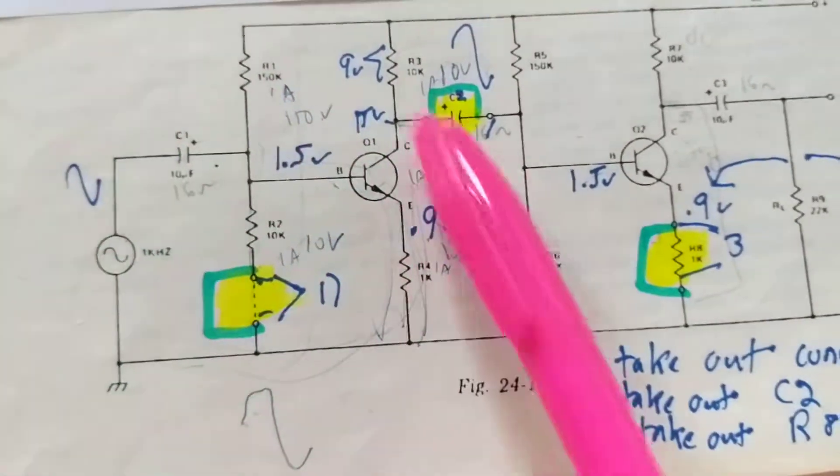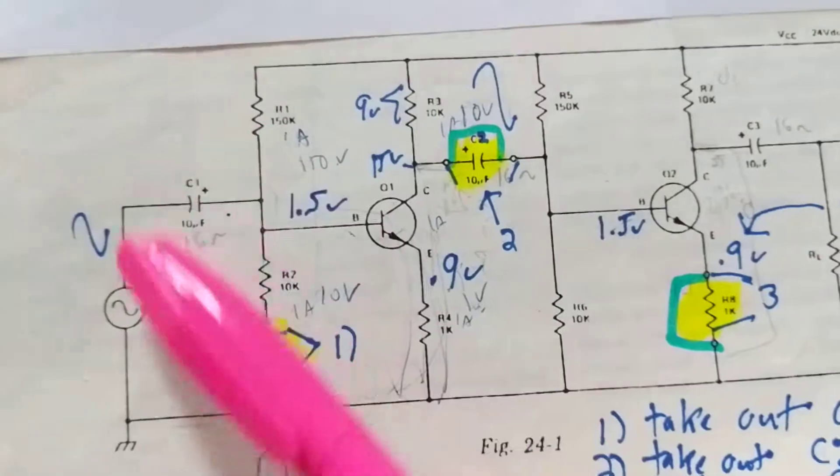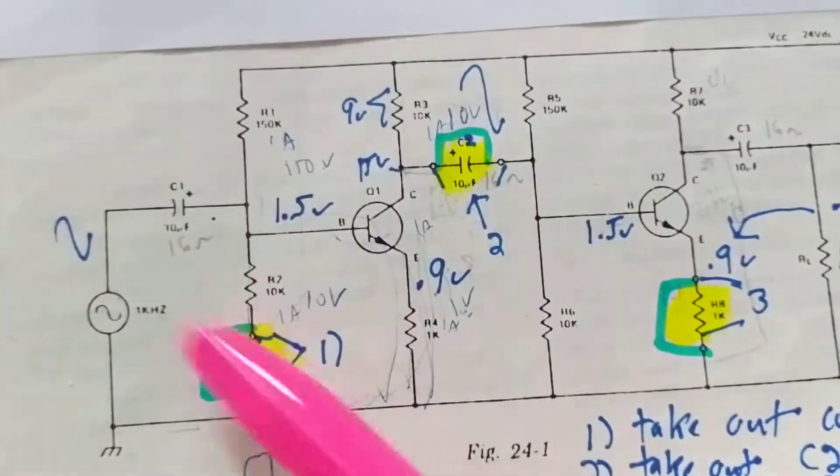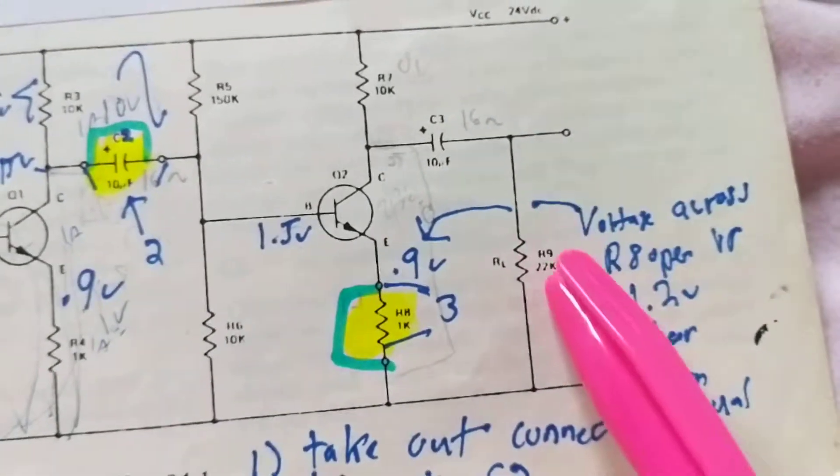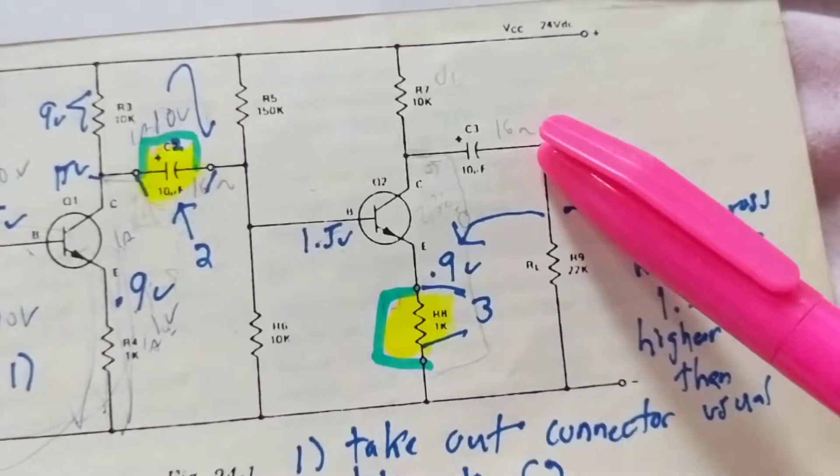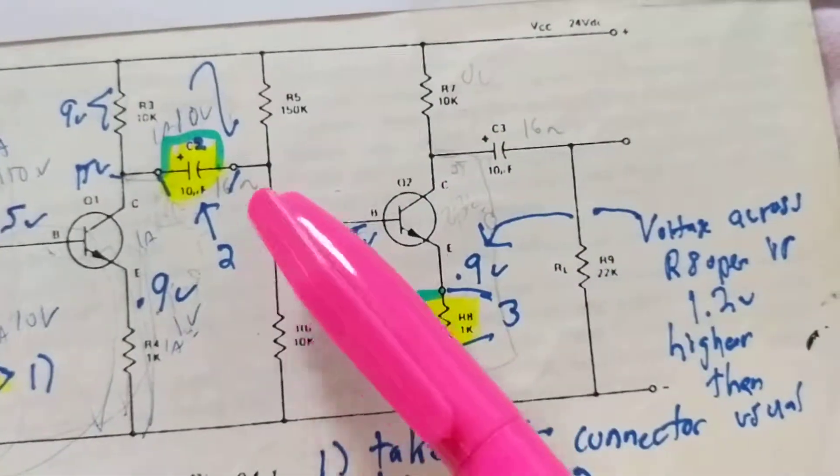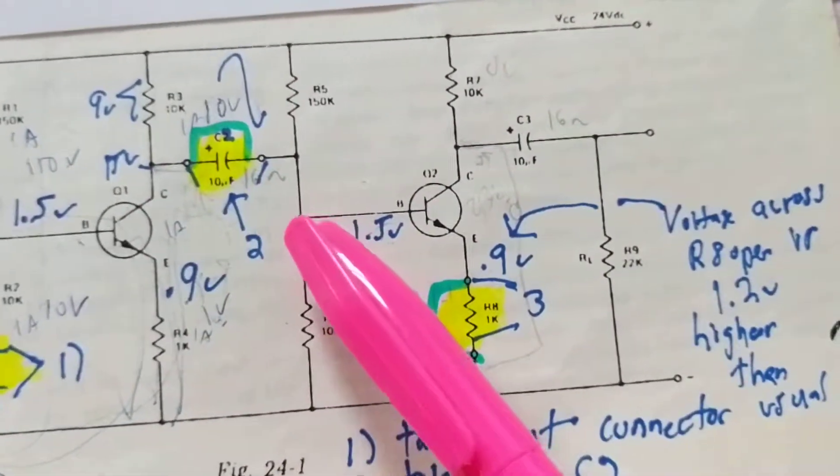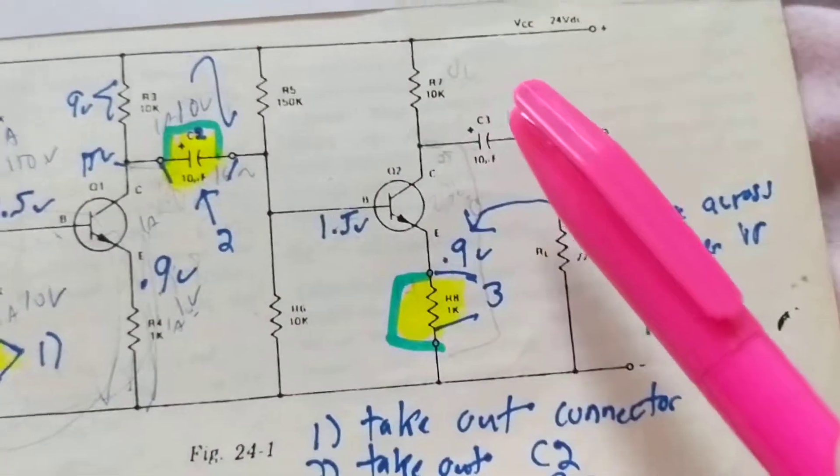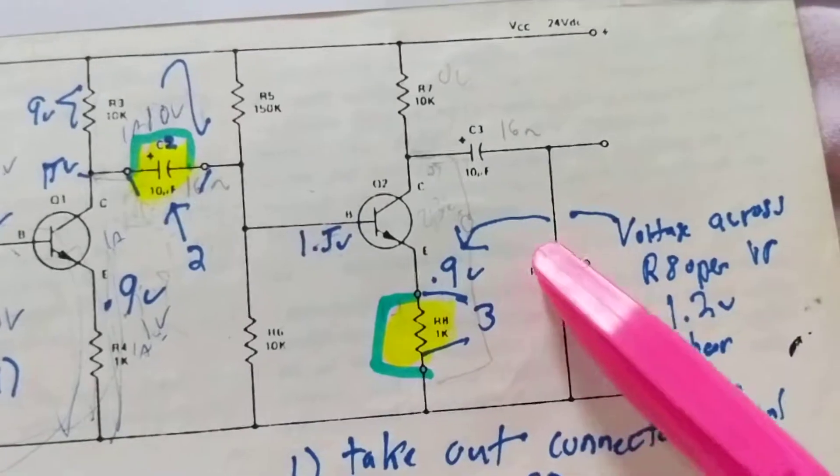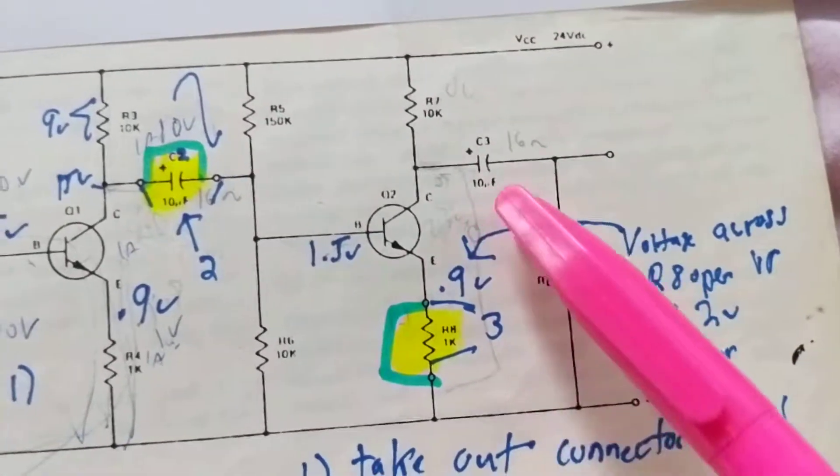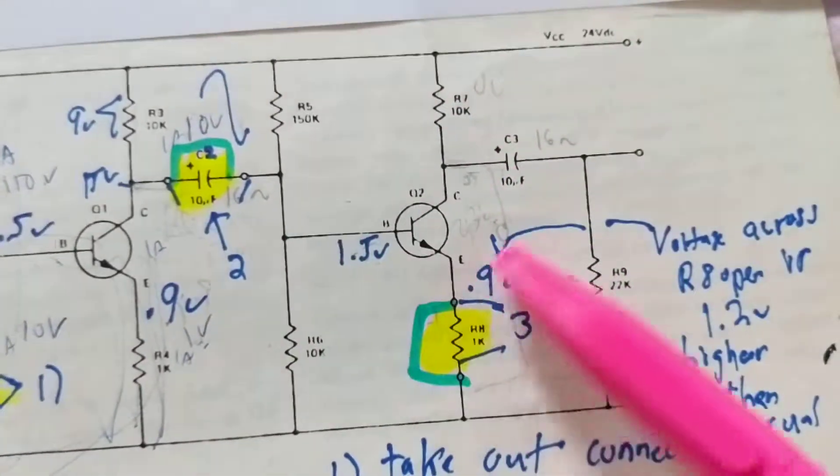I should expect to see a regular sine wave with amplification and inverted. That tells me right away this circuit is working properly. I go over here to the output across RL. My signal looks good over here. My signal does not look good over here. I have no output at the speaker or the load. That tells me right away this part of the circuit is defective.